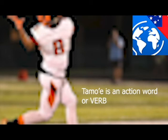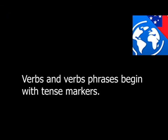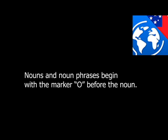So with action words, you're going to start those types of sentences with a tense marker. Look up the tense marker video for those types of sentences. But for now, we're going to concentrate on nouns. Just remember, phrases that begin with nouns are going to start with O in front of the noun.